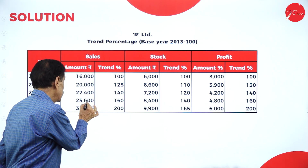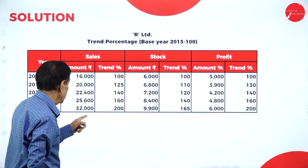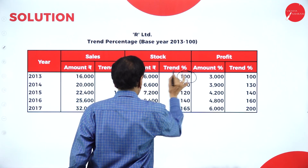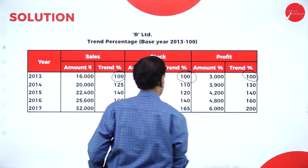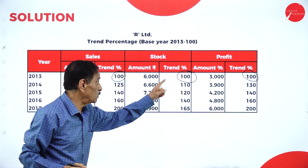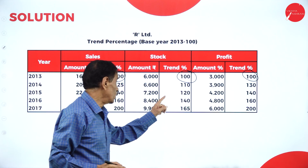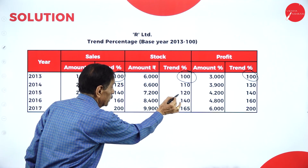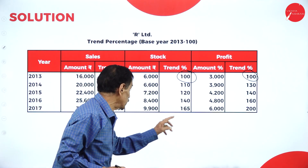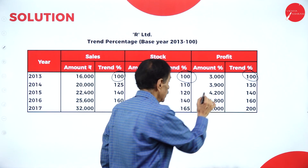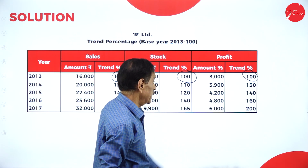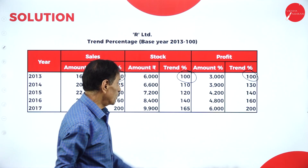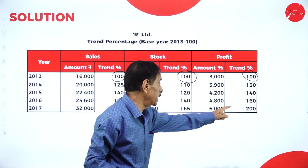For profit: 20,000 divided by 16,000 into 100 is 125; 22,400 divided by 16,000 into 100 is 140; 25,600 divided by 16,000 into 100 is 160; 32,000 divided by 16,000 into 100 is 200. For stock: 6,600 divided by 6,000 into 100 is 110; 7,200 divided by 6,000 is 120; 8,400 divided by 6,000 is 140; 9,900 divided by 6,000 into 100 is 130 — wait, 165. And 4,200 divided by 3,000 into 100 is 140; 4,800 divided by 3,000 into 100 is 160.